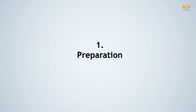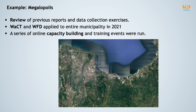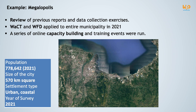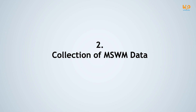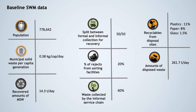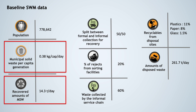The first step they applied is the preparation step. The map you see here is the map of Megalopolis, and you will find key information about Megalopolis in the blue box. The local team collected municipal solid waste management data using the WACT and the WFD. There are three key pieces of information: the municipal solid waste generation rate, the amount of municipal solid waste recovered, and the amount of disposed waste.